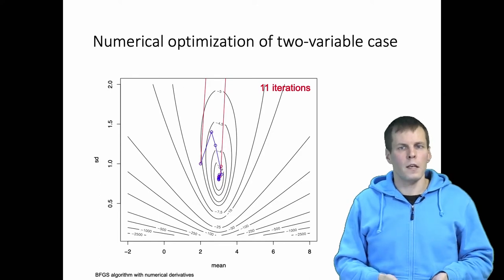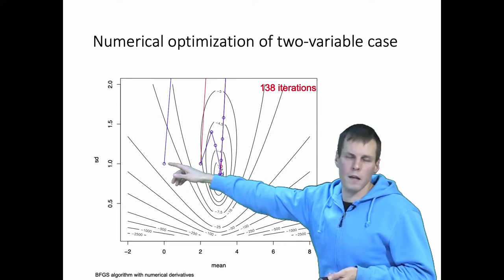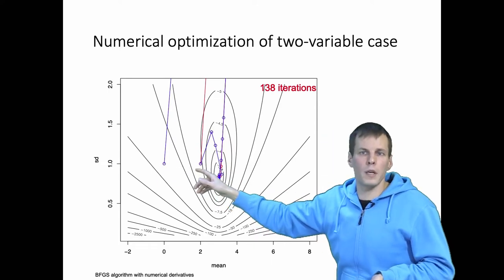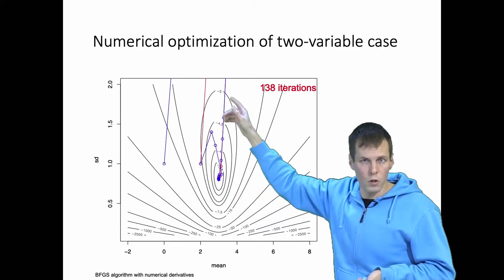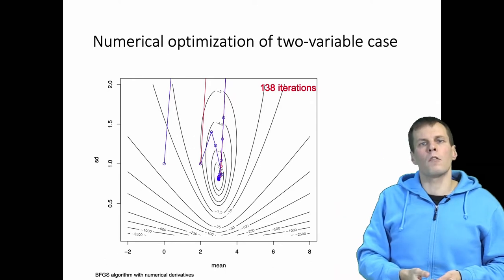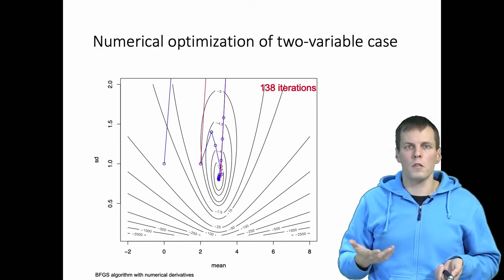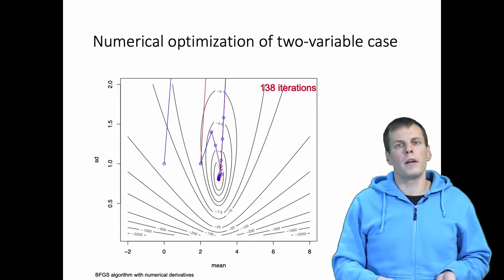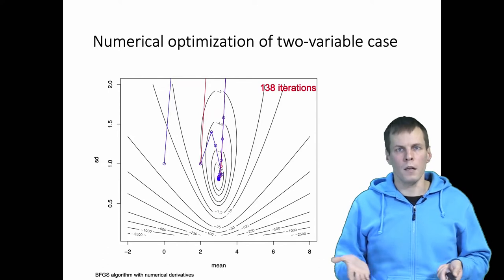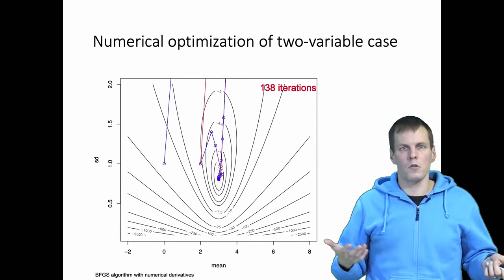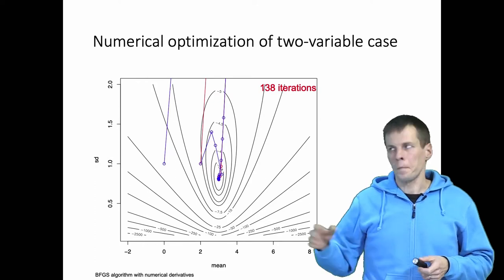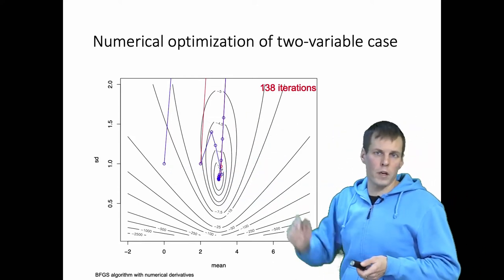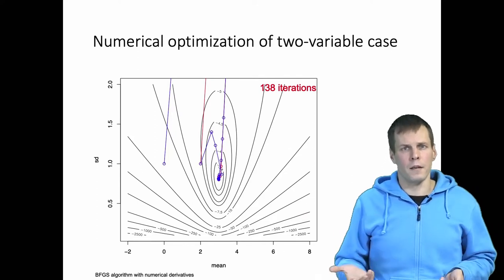If we start from a different point — say mean = 0, standard deviation = 1 — the path is different. Zero is further from 3 than two was, and BFGS takes 138 iterations from that starting point. So if the algorithm converges, the speed of convergence depends mainly on two things: the choice of algorithm and how well it suits the problem, but more critically on the starting value. Newton's method works best when the function has continuous second derivatives and the starting value is close to the actual maximum.